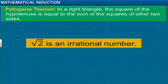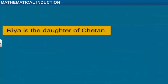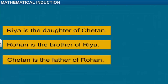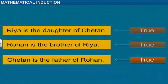Let's look at a simple example. Riya is the daughter of Chetan. Rohan is the brother of Riya. Chetan is the father of Rohan. In these sets of statements, the truth of the last statement can be established only if the first two statements are true. This means that the truth of the last statement is established by deductive reasoning or logic.